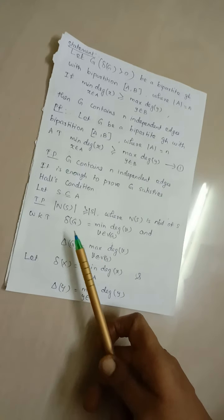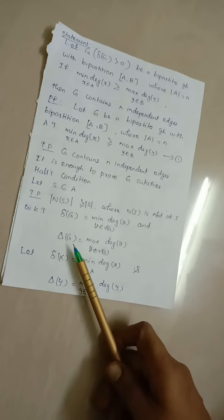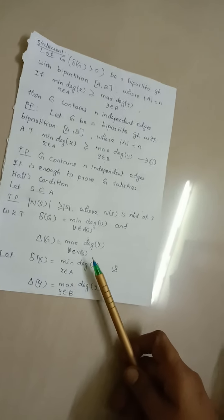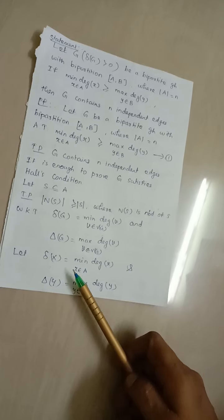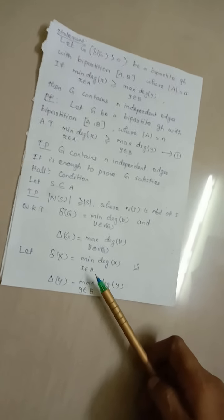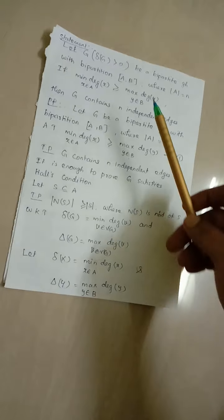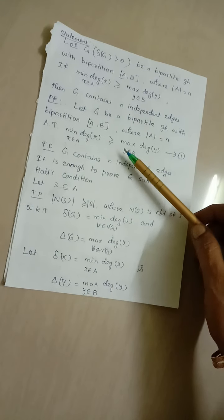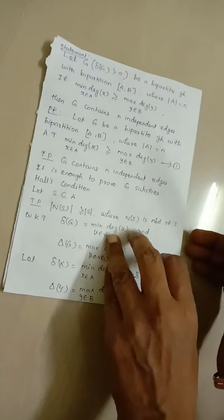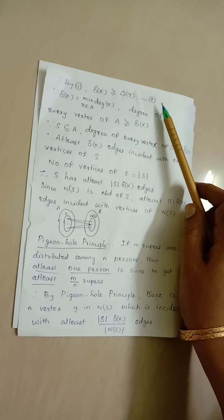We know that δ(G) denotes the minimum degree of v where v is in the vertex set of G, and Δ(G) denotes the maximum degree of v where v is in the vertex set of G. In this theorem, δ(X) denotes the minimum degree of x where x is in capital A, and δ(Y) denotes the maximum degree of y where y is in set B. With this notation, the assumption becomes δ(X) ≥ δ(Y), which we label as equation number 2.